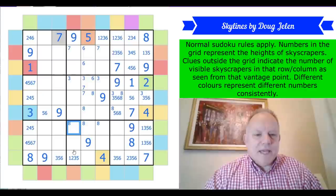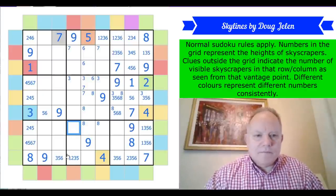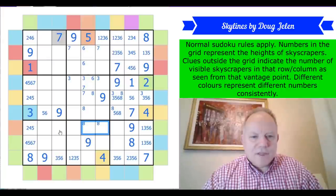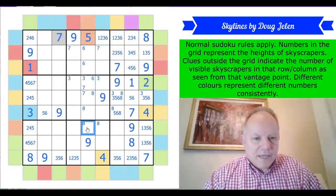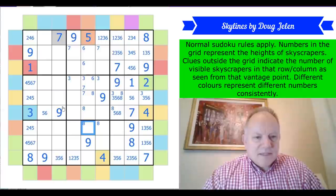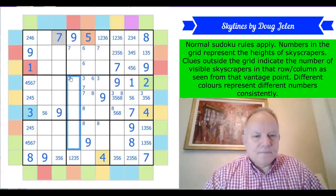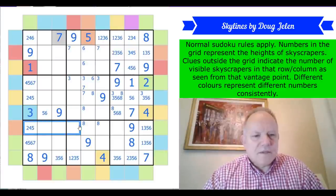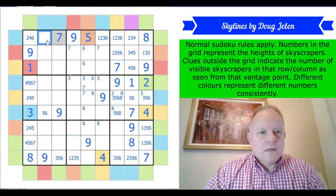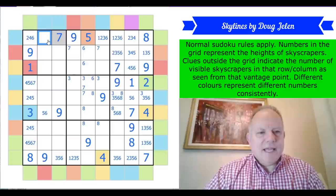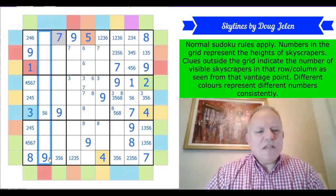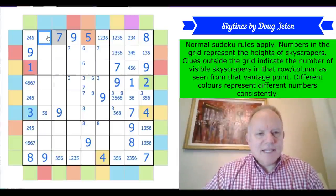Eight can't be here because of this orange being five at the bottom, so eight in this row is now in one of these two places. This is a three clue for the whole column, so whatever is here - which isn't eight - is bigger than everything it then sees until it gets to eight. It can't be a one or two here; it's three, four, or six.